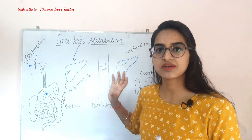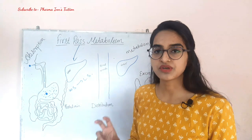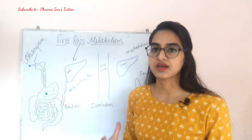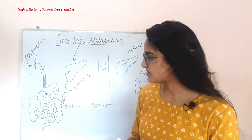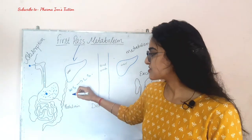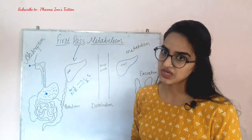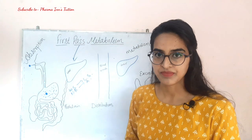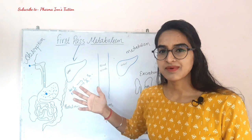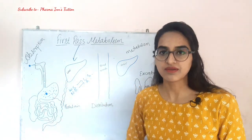The drug is given in inactivated form because if given directly in activated form, it would be destroyed in the stomach or intestine. So the second function of the liver is to convert the non-activated drug into its activated form. That is why drugs are given in inactivated and water-soluble form.